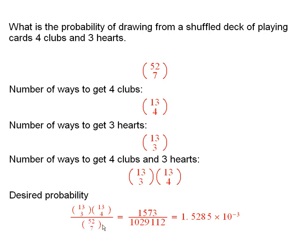And so when you work this out, you end up with this number here, about 1.5 times 10 to the minus three.